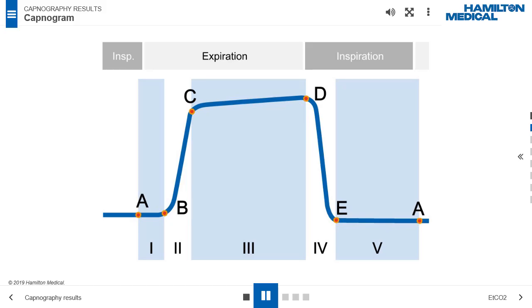A normal capnogram over a breath cycle typically has five consecutive phases divided by five markers, A, B, C, D, and E. Phase 1, A to B, when expiration starts, the gas that first passes the CO2 sensor is coming from the conducting airways, so the CO2 is either very low or zero.